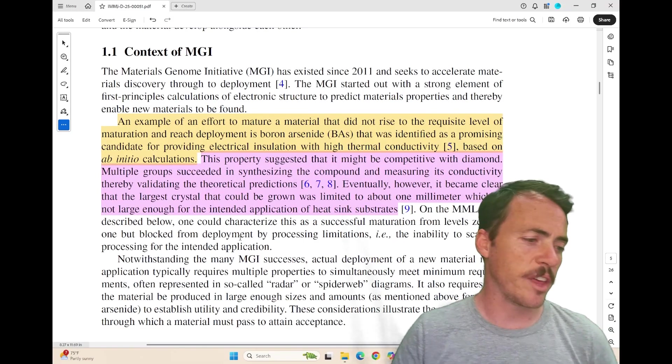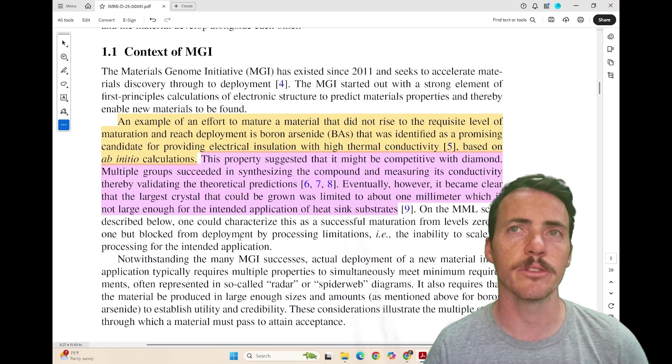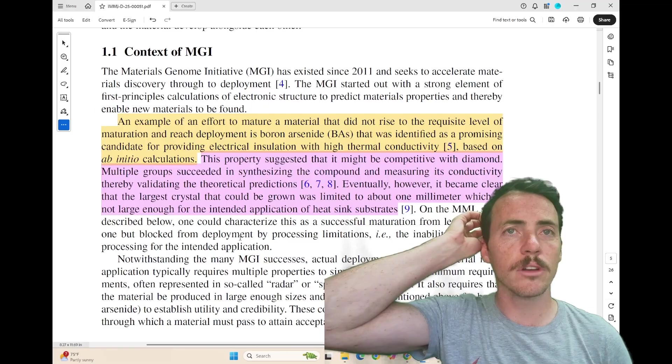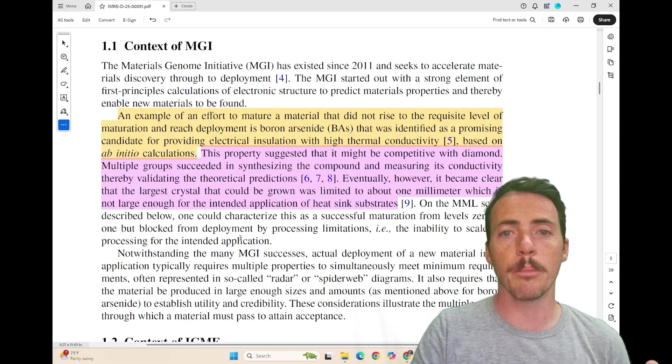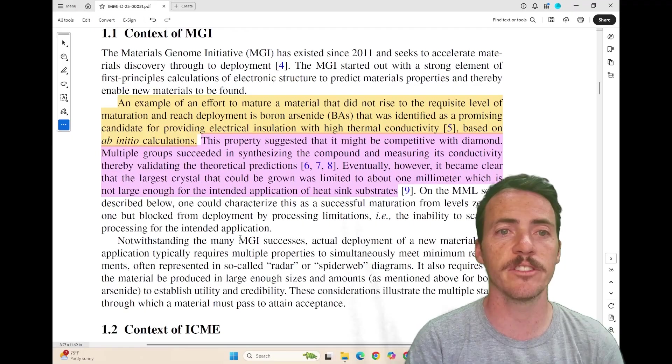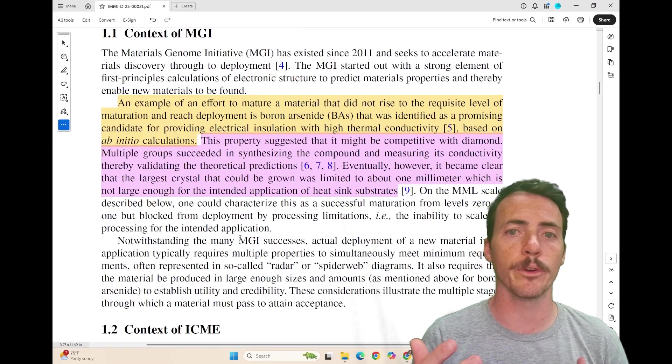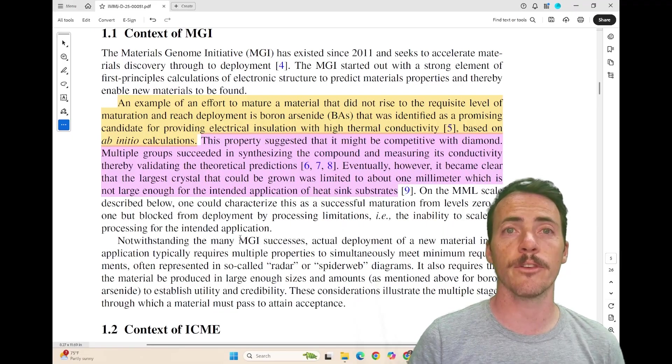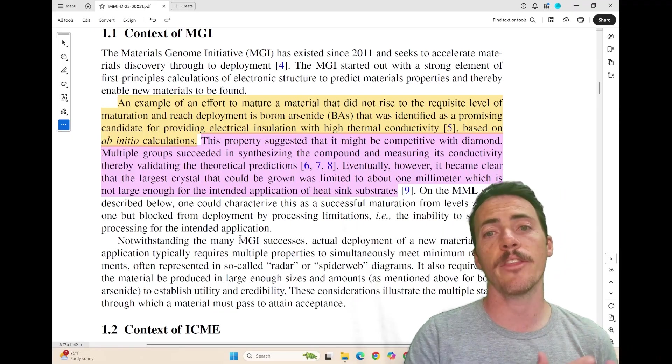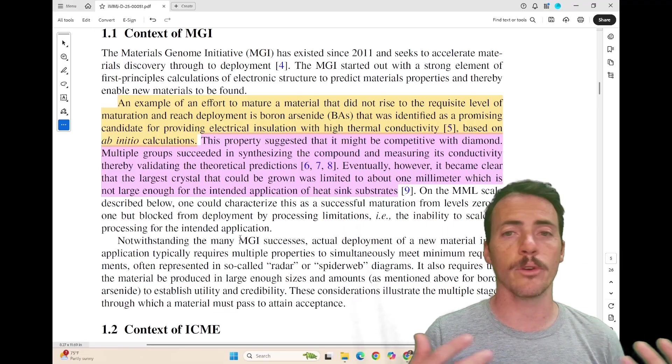One of the great things about this paper is they have a number of interesting case studies or demonstrations where MMLs either could have shown that something was going to work or that it wasn't going to work. For example, they talk about boron arsenide. This is a material they point out that never really reached that maturity level for it to be used, even though it was originally identified as a promising candidate for electrical insulation and high thermal conductivity. So think of like electronic packaging.